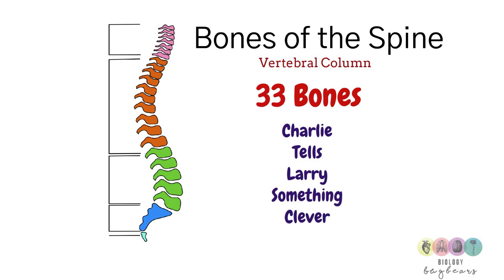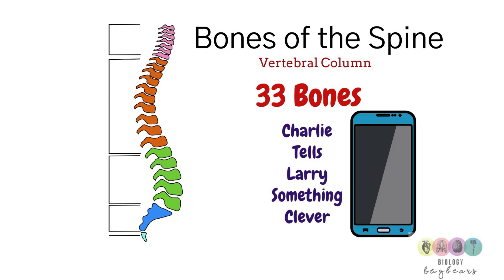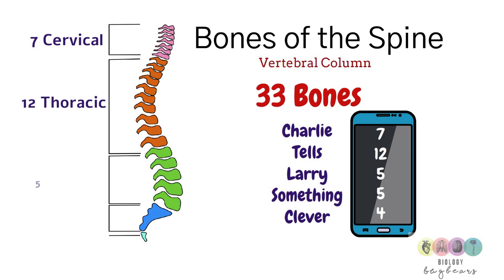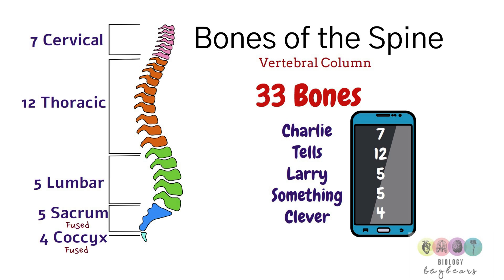We have a rhyme to help remember: 'Charlie tells Larry something clever' — given to us by Gary, a former student. And there's also a phone number: 712554. The first region is the cervical region with 7 vertebrae, then 12 in the thoracic, 5 in the lumbar, 5 in the sacrum, and 4 in the coccyx. It's important to know that the bones in the sacrum and the coccyx are fused.